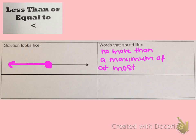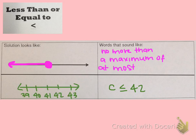Let's look at this with an actual inequality. We have C is less than or equal to 42. I've drawn and numbered my number line. Because it is less than or equal to, it includes 42, so we do a closed dot. Anything less than 42 is to the left, so we draw an arrow to the left of the dot to show everything to the left is included in the less than or equal to portion. That's it for your notes.